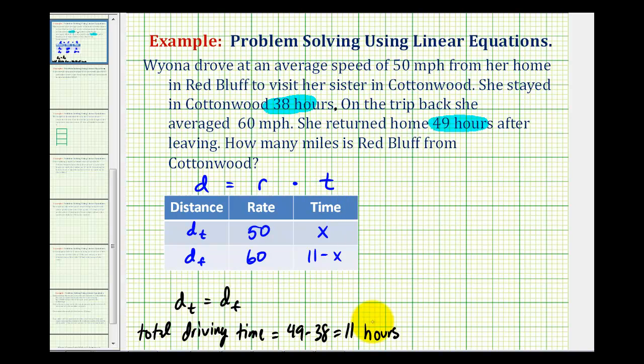Now we have enough information to solve this problem. We will have to do this in two stages since d sub t, the distance to Cottonwood, is equal to d sub f, the distance from Cottonwood. That means 50 times x must equal 60 times 11 minus x. Again, if the distances are the same, then the rate times the time must also be the same.